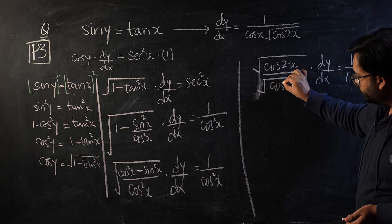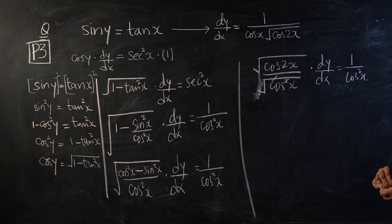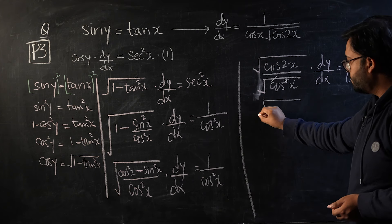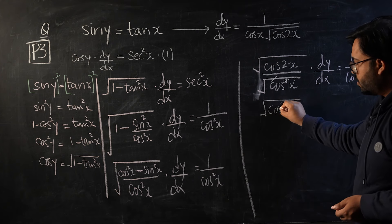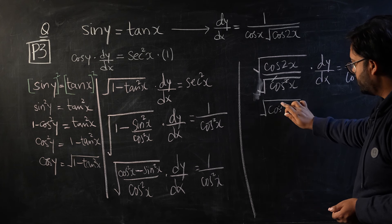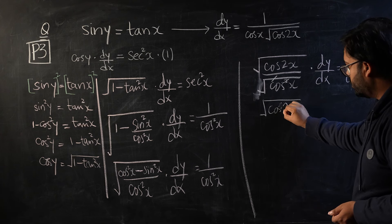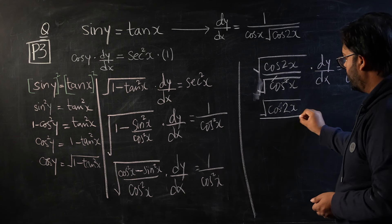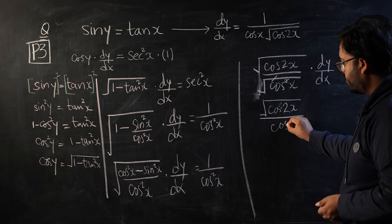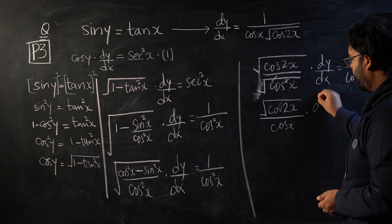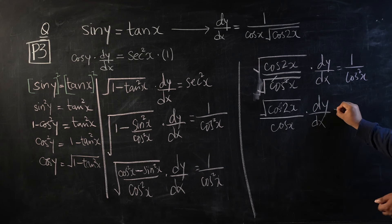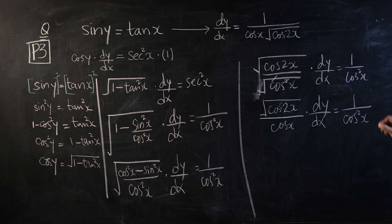You can see that the square root and the square will cancel. Once that is done, we have square root of cos 2x over cos x, times dy/dx, equals 1 over cos squared x. We are almost at our final position.